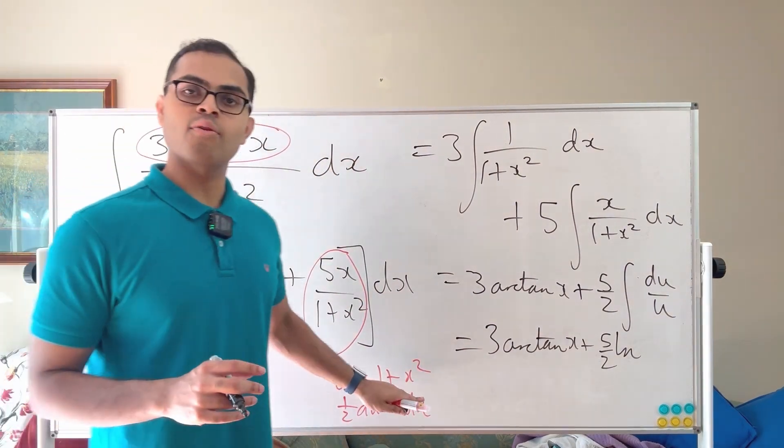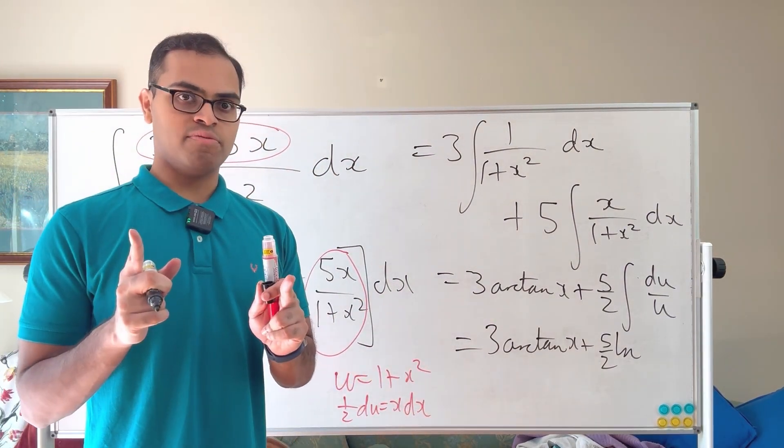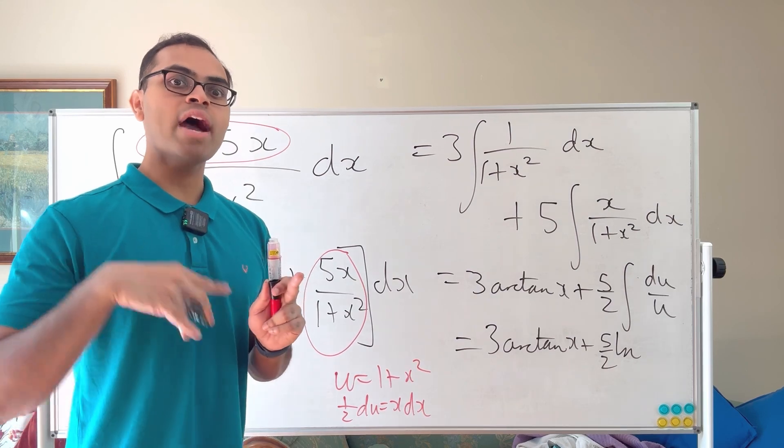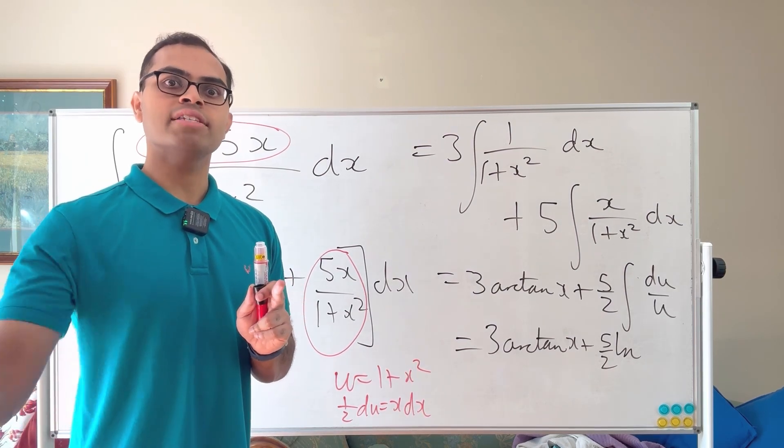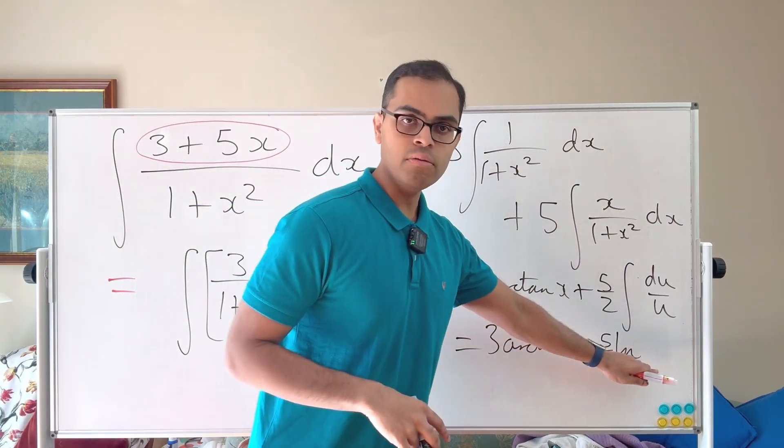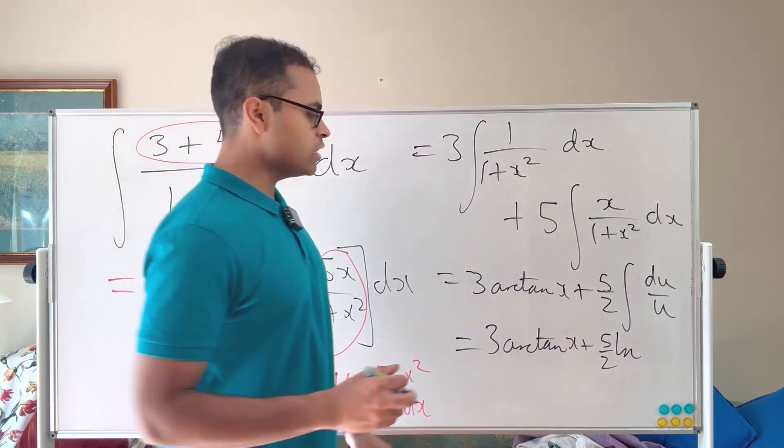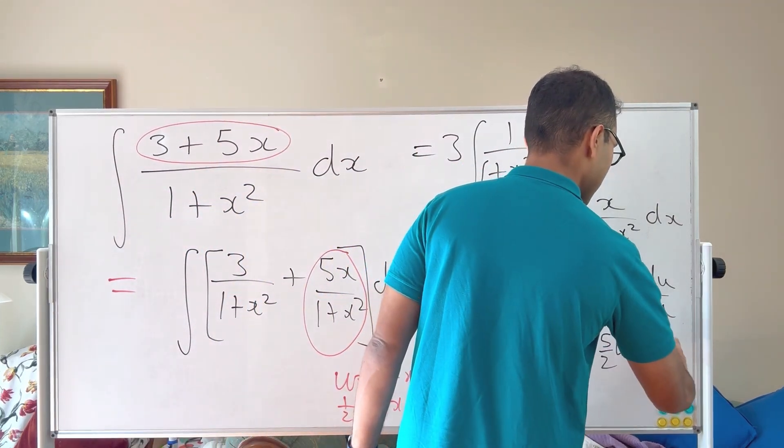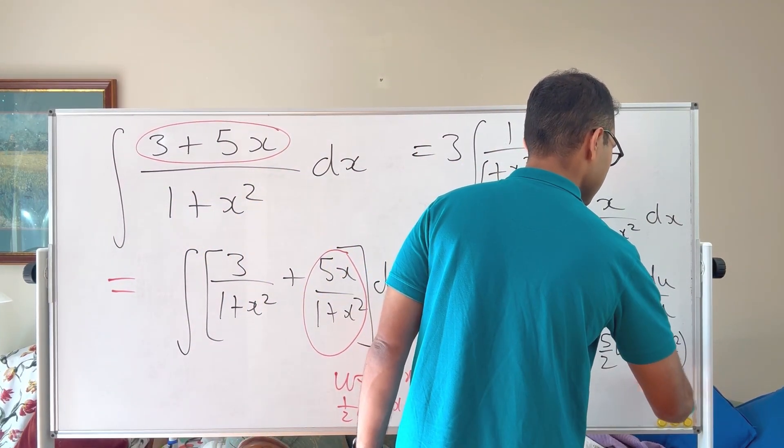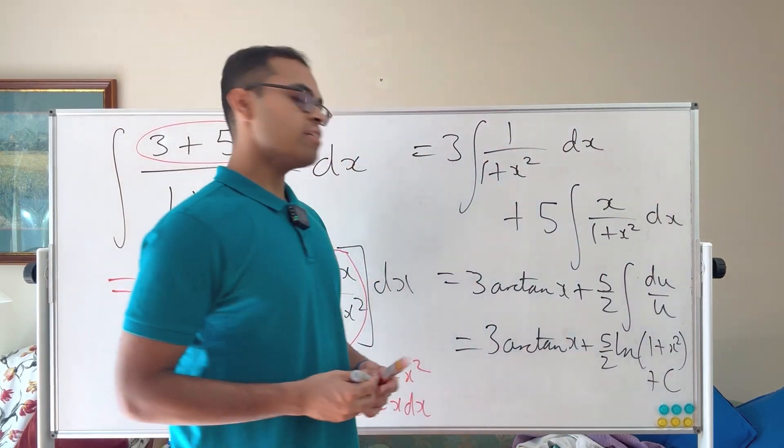So we get 3 arc tan x plus 5 over 2 times log of the absolute value u plus a constant, but u was 1 plus x squared. And we can even do away with the absolute value, because 1 plus x squared is always positive, because perfect squares are always at least 0. So it would be log u, log absolute value u, can just be log u, and u is 1 plus x squared. So it's going to be log 1 plus x squared plus a constant. So that's our integral.